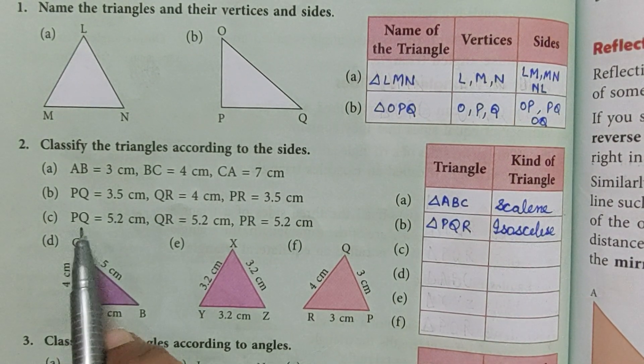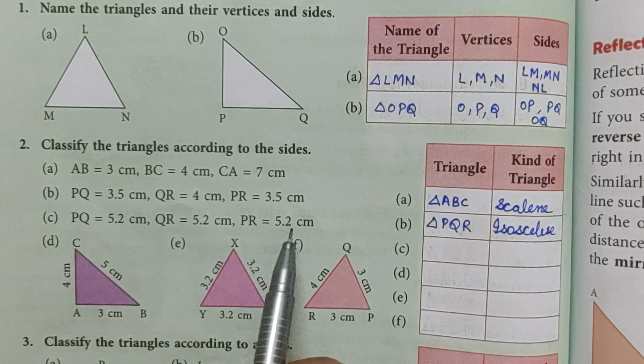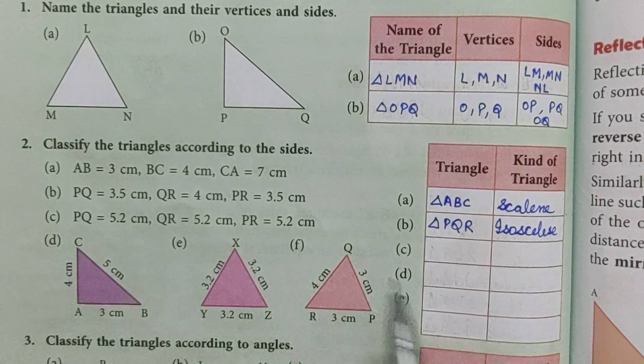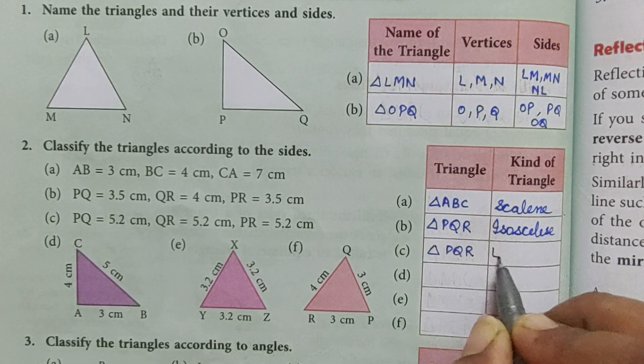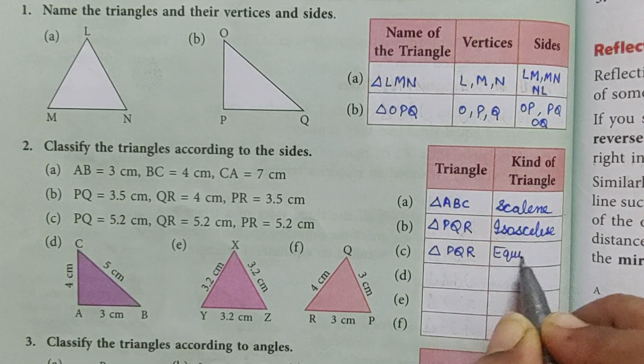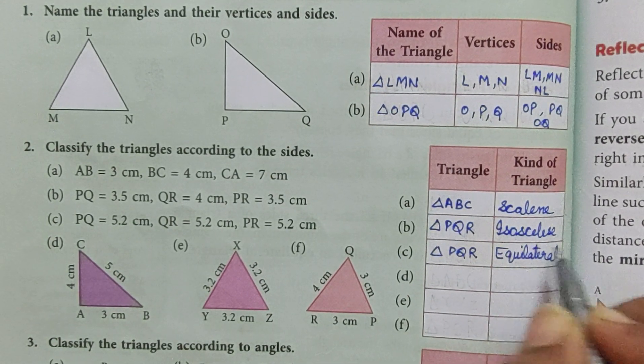Now third one is 5.2, 5.2, 5.2. All the three sides are equal, so triangle PQR, equilateral triangle.